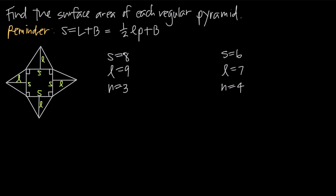For example, if a pyramid has side length 8, lateral height 9, and the base has 3 sides, we can find the surface area. Since the base has three sides, it's a triangle — specifically an equilateral triangle since it's a regular pyramid, with all three sides of length 8. Using the formula SA = ½LP + B, we get ½ × 9 × P. With three sides each of length 8, the perimeter is 24.